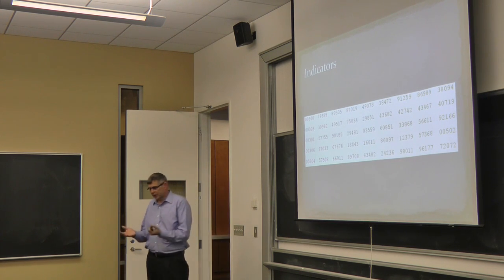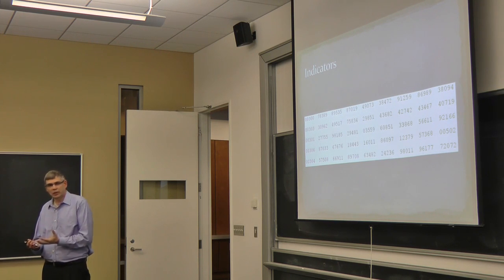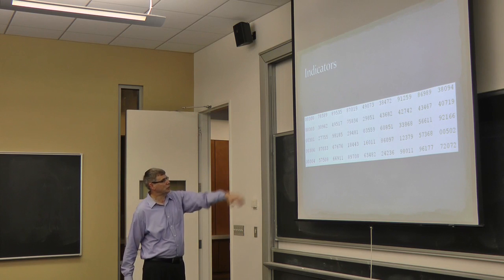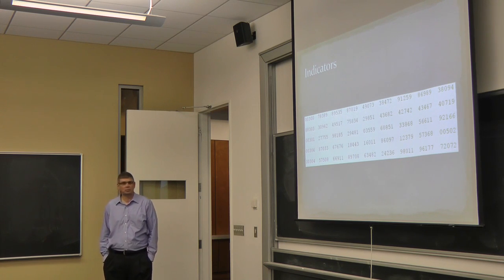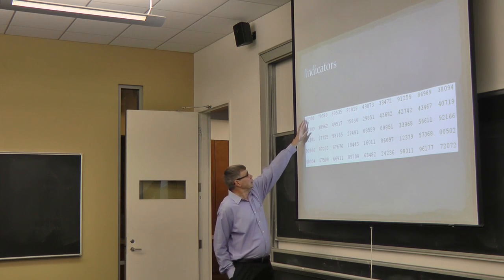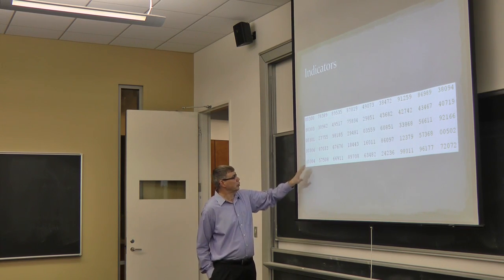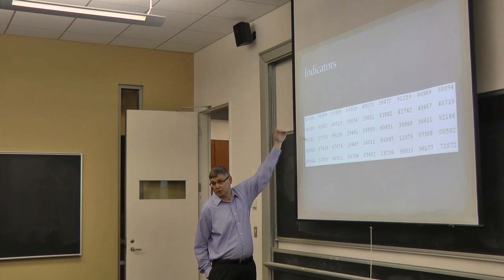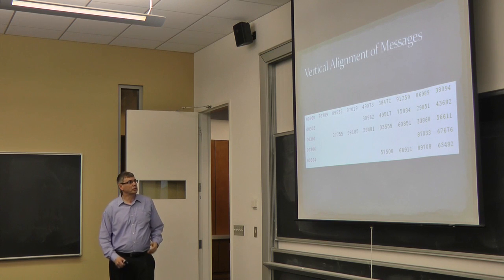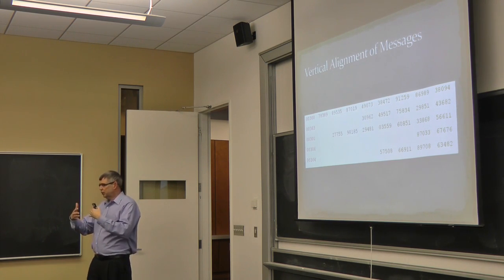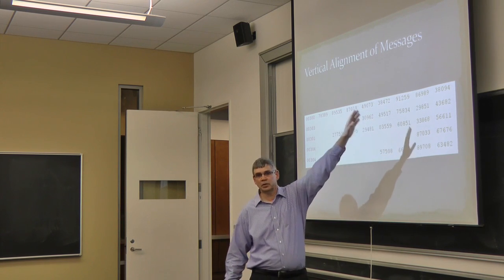Now, it was important in breaking JN-25 and these other additive ciphers to try to first break the indicator system, because that provided a lot of information for the code breakers. This is a very simple one. There are five messages here. It's pretty easy to spot that the indicator is that first block. All the other numbers look pretty much random. Each of these has 003 as the first three digits. That's the page number. The fourth digit is the row number. These are all from row zero, which I'm assuming is the top row. And these are the column numbers. Now, what that means is having broken the indicator system, the code breakers can align the messages vertically, align them in depth, so that each of these columns has been encrypted using the same additive.